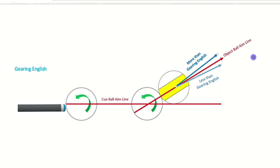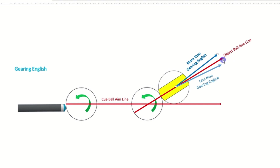Cut-induced throw is a constant for a specific shot. Gearing English perfectly counteracts this throw, making the ball travel straight. Less than gearing English results in cut-induced throw pushing the shot forward, requiring a short aim. More than gearing English causes spin-induced throw to pull the shot toward you, also requiring a short aim. In simpler terms: aiming directly at the pocket works only with gearing English. Less English needs a short aim to compensate for the long drag; more English needs a long aim to counter the pull toward you. By understanding these concepts, you can master English and become a more precise billiards player.